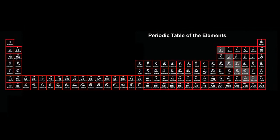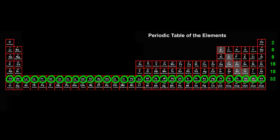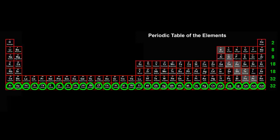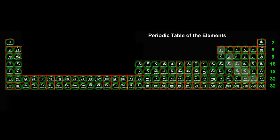This layout also makes it easier to see how many elements are in each row. 2 in the first row, 8 in the second, 8 in the third, 18 in the fourth, 18 also in the fifth, 32 in the sixth, 32 in the seventh. Altogether, there are 118 elements.